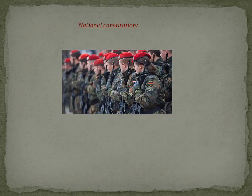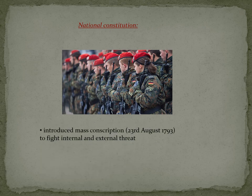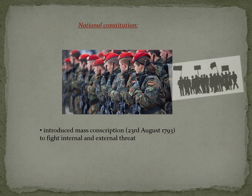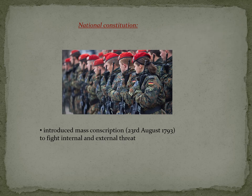The National Convention reorganized the army and introduced mass conscription on the 23rd of August 1793, so everybody was involved in supporting the revolution, and the rule of the National Convention was consolidated. At the beginning of 1794, the counter-revolutionary uprisings were ended. The revolutionary army became more and more successful.